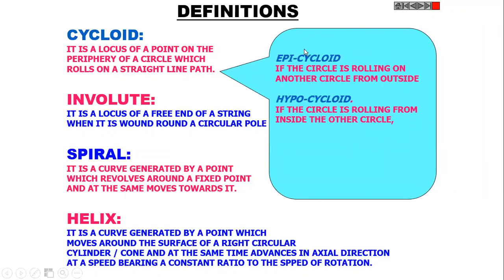In cycloid, there are two types. Epicycloid means if the circle is rolling on another circle from outside, it is called epicycloid. Hypocycloid means if the circle is rolling from inside the other circle, it is called hypocycloid.